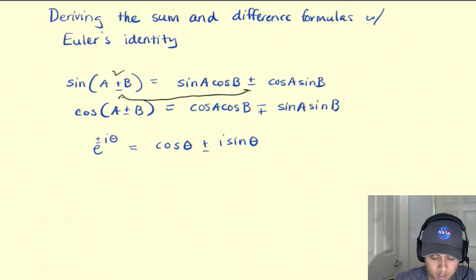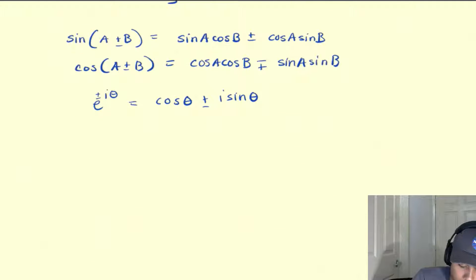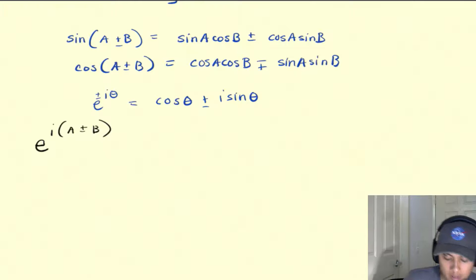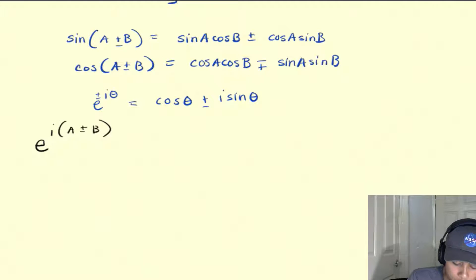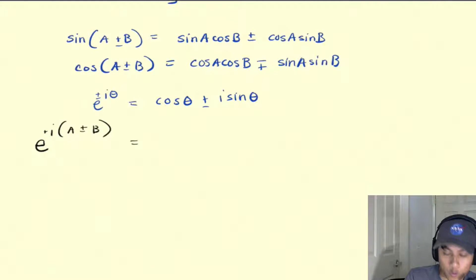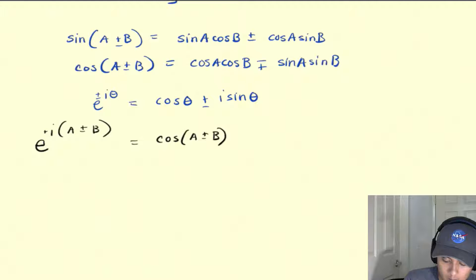Getting started on the derivation, I'm going to write e to the i times (a plus or minus b). So what does this mean? Well, according to Euler's identity above, this should equal cosine of (a plus or minus b) plus i·sine of (a plus or minus b).